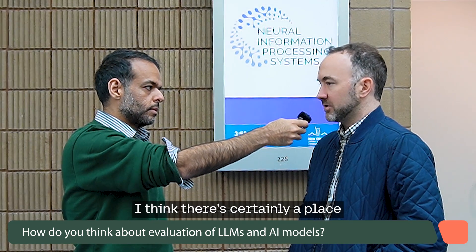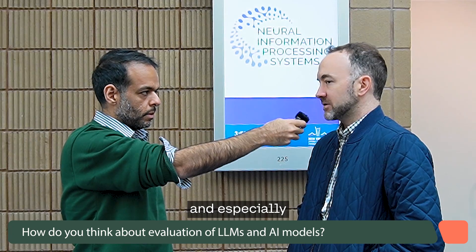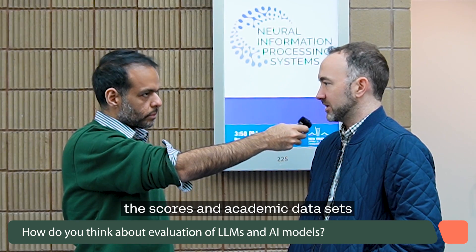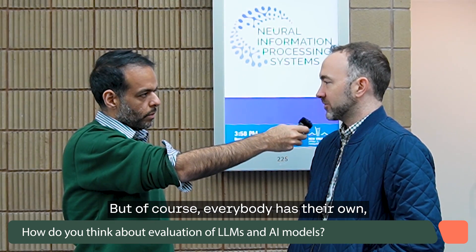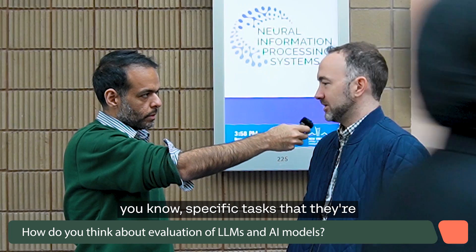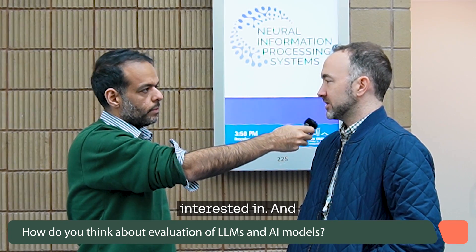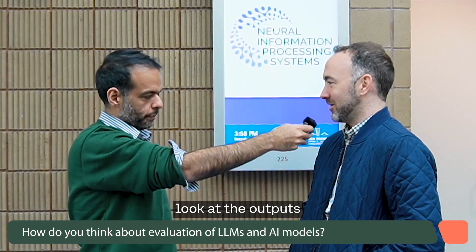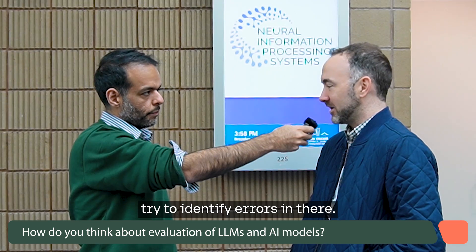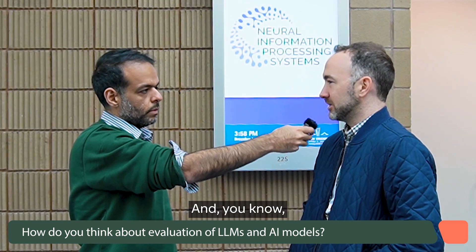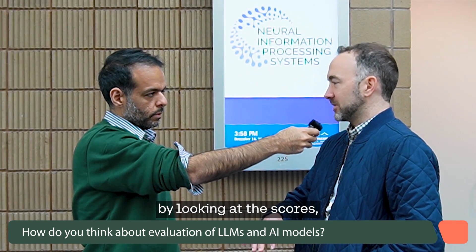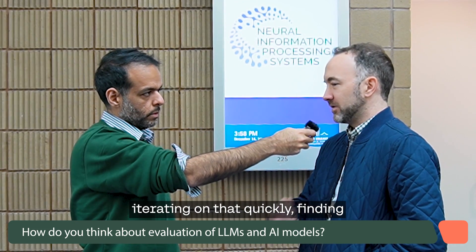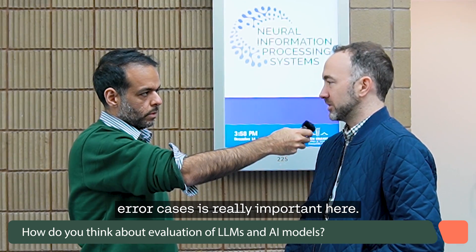There's certainly a place for academic datasets, and especially when people are trying to choose the base models they want to use, looking at scores on academic datasets is probably not a bad idea. But of course everybody has their own specific tasks, and what I definitely recommend is to look at your data, look at the outputs, try to identify errors, and iterate quickly — finding error cases is really important.